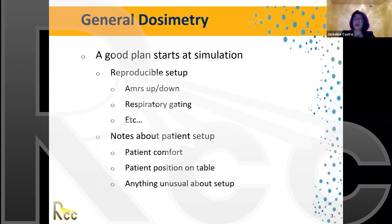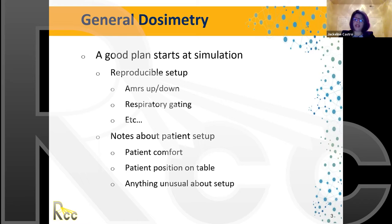Therapists tell us how they set up the patient, including why any unusual setup was used — for patient comfort, for instance. They note the position on the table, give us vertical measurements, and tell us the vertical distance to the lateral BBs as a physical reference versus what we have on the scan. Anything unusual about the setup should be mentioned — we'd rather have more information than not enough.